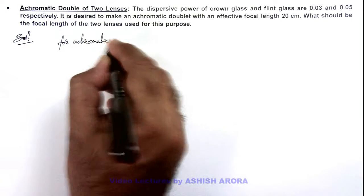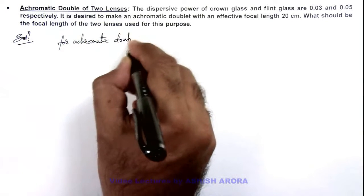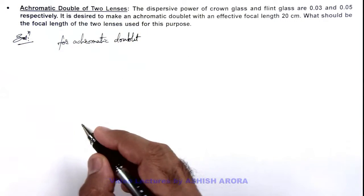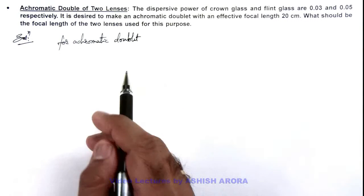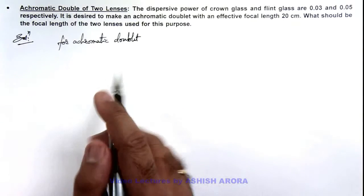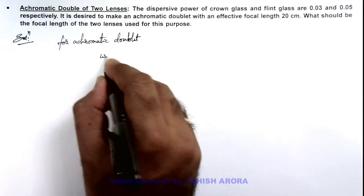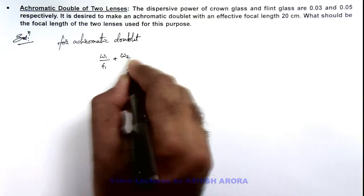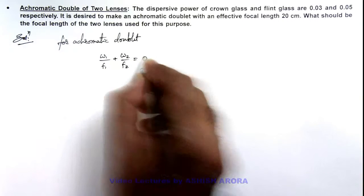For an achromatic doublet, this implies the total dispersion due to these two lenses must be zero. So here we can write omega 1 by f 1 plus omega 2 by f 2 should be equal to zero.